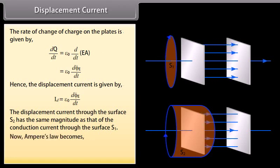Now Ampere's law becomes closed integral of B dot DL is equal to mu not multiplied by I plus epsilon not D phi E by DT.